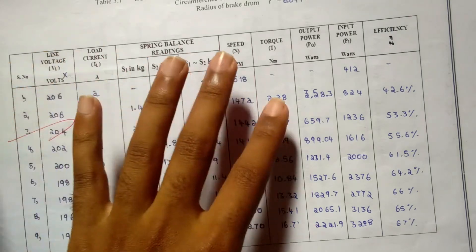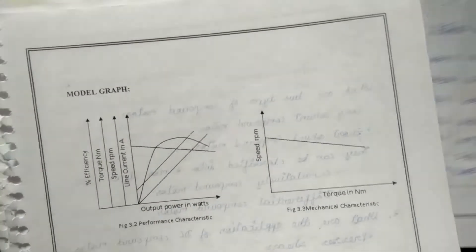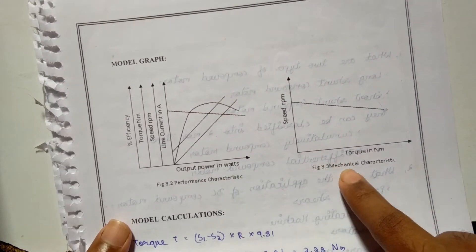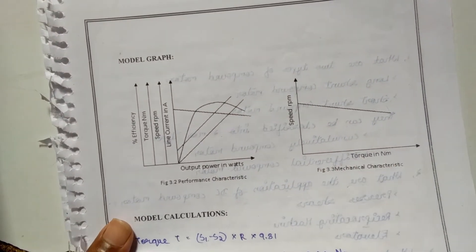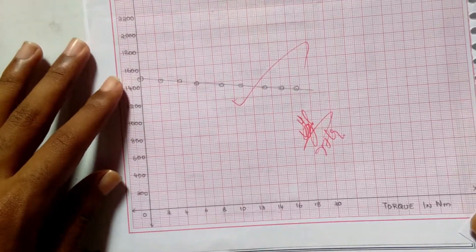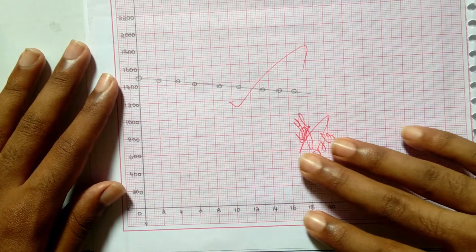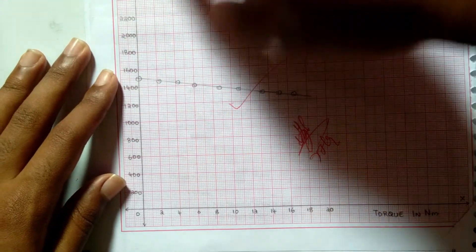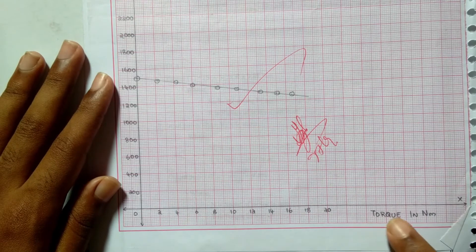After finding all the values, we should draw these two curves. One is performance characteristics and the other is mechanical characteristics. This is the graph for mechanical characteristics. In the y-axis we have taken speed in rpm, and in the x-axis, torque in newton meters.